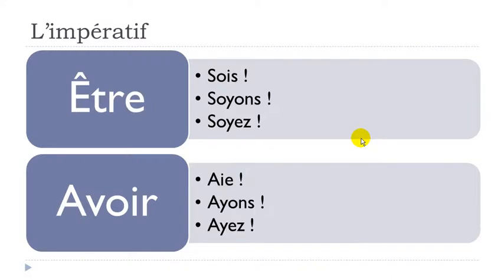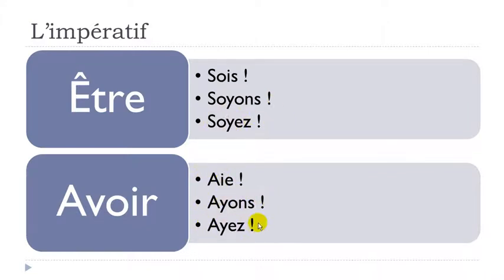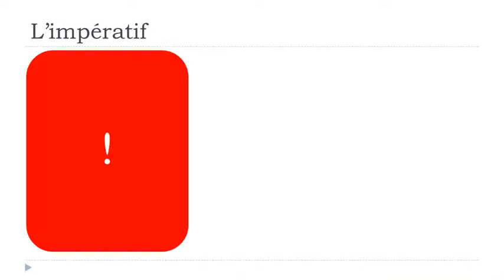And 'avoir' becomes 'Aie!', 'Ayons!', 'Ayez!' — remember the final S is not pronounced, so you only have the A-I sound: 'Aie!', 'Ayons!', 'Ayez!' So to recap the irregular forms: être → Sois!, Soyons!, Soyez! — and avoir → Aie!, Ayons!, Ayez!